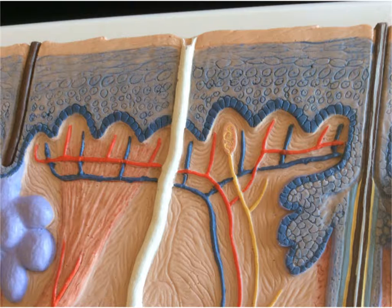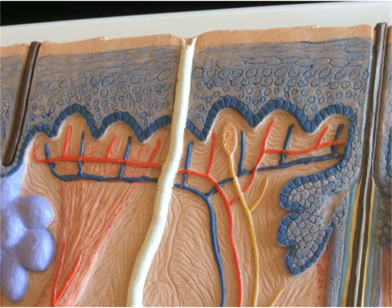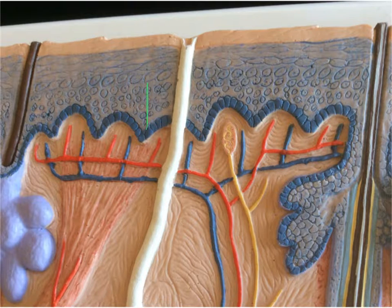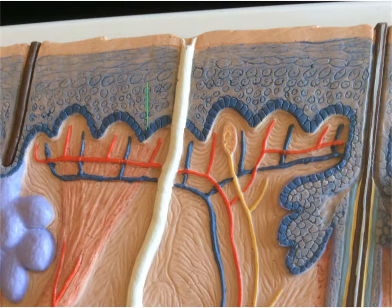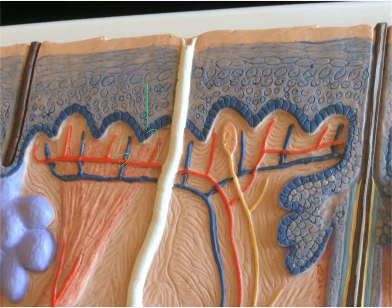The second layer is what we call the stratum spinosum. If you look at the stratum spinosum, it is made up of several cell layers — we can actually have five to seven different cell layers.